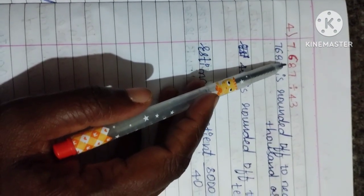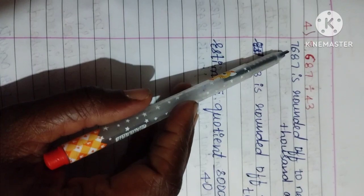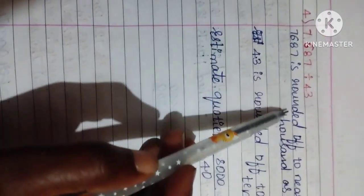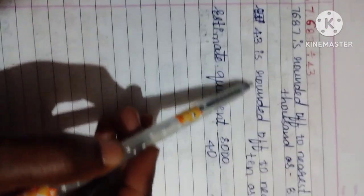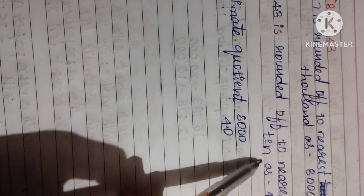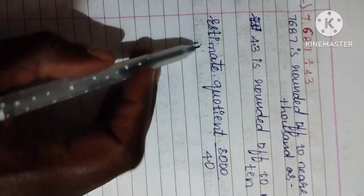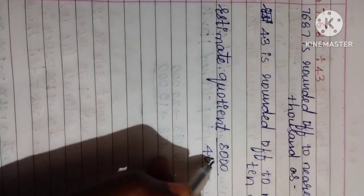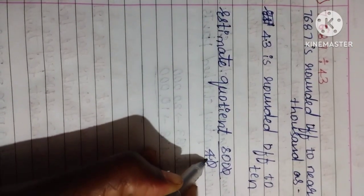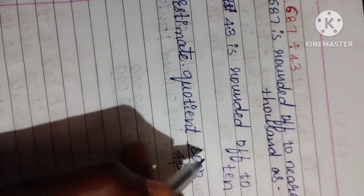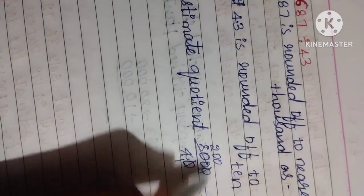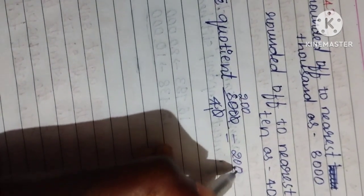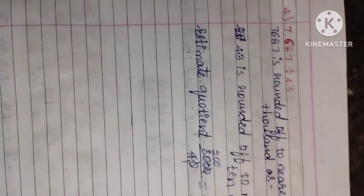Next we have fourth question: 7,686 divided by 43. 7,686 is rounded up to nearest 1000 as 8000, and 43 is rounded up to nearest 10 as 40. We can see now. Estimate quotient is: cancel the zeros. 4 twos are 8. Now answer is 200. I hope you understood this.